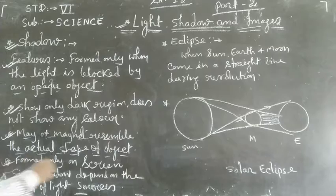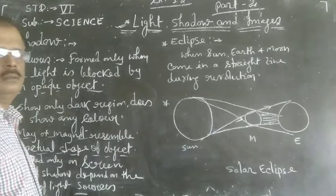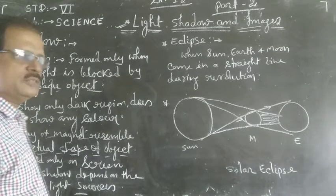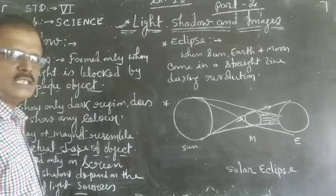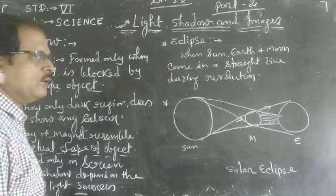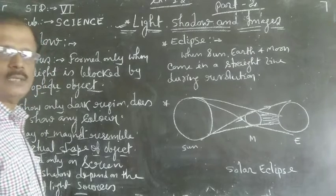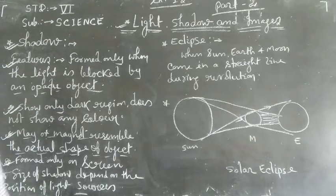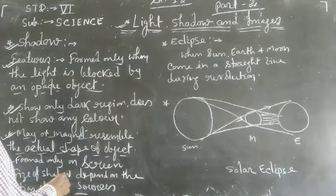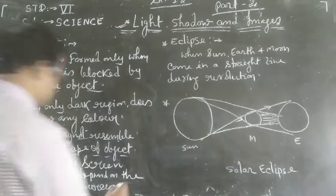Shadow forms only on a screen — a screen must be needed for forming a shadow. Without any screen, we cannot see the shadow of any opaque object. The size of the shadow depends on the position of the light source.